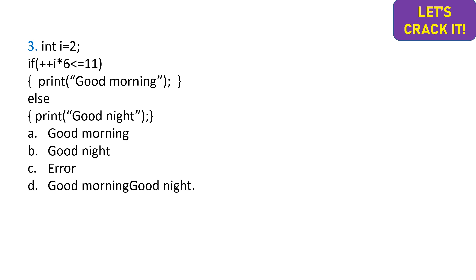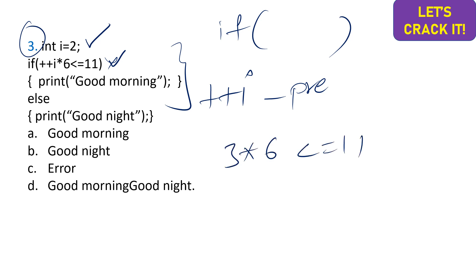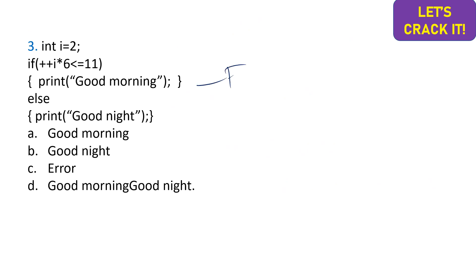The third question gives a few lines of code: integer i = 2, then an if condition with ++i * 6 <= 11. Since ++i is a pre-increment operator, the value is incremented first — so 2 becomes 3. Then 3 * 6 = 18, and 18 <= 11 is false. So the if block is not executed and the compiler goes to the else case and prints 'goodnet'. Option B is the correct answer.